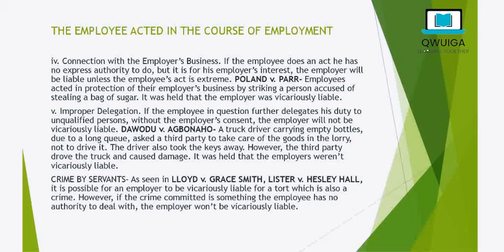There is also the category of a crime committed by an employee. It is quite possible for an action to be both a crime and a tort at the same time. As said in Lloyd v Grace Smith and Lister v Esley Hall, it is possible for an employer to be vicariously liable for a tort which is also a crime. However, if the crime committed is something the employee has no authority to deal with — not connected to the scope of employment and not authorized by the employer — then the employer will not be vicariously liable, as it is outside the scope of authority.